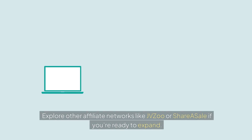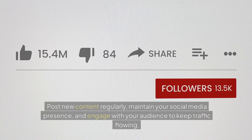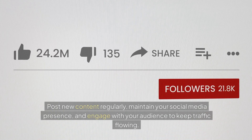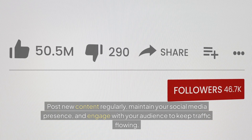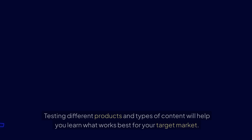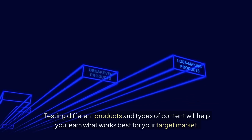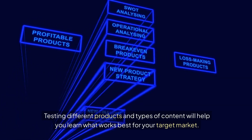Explore other affiliate networks like JVZoo or ShareASale if you're ready to expand. Consistency is key — post new content regularly, maintain your social media presence, and engage with your audience to keep traffic flowing. Test different products and types of content to learn what works best for your target market.